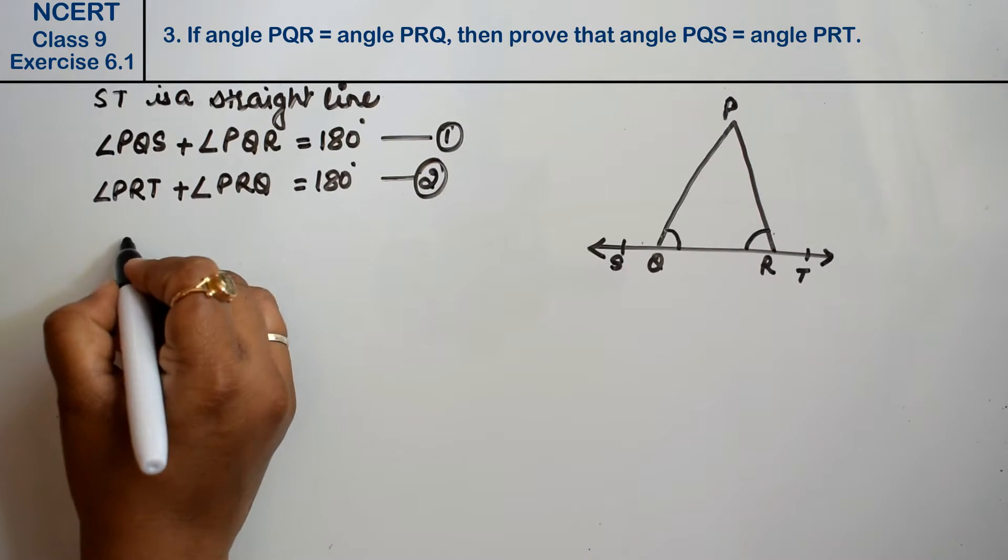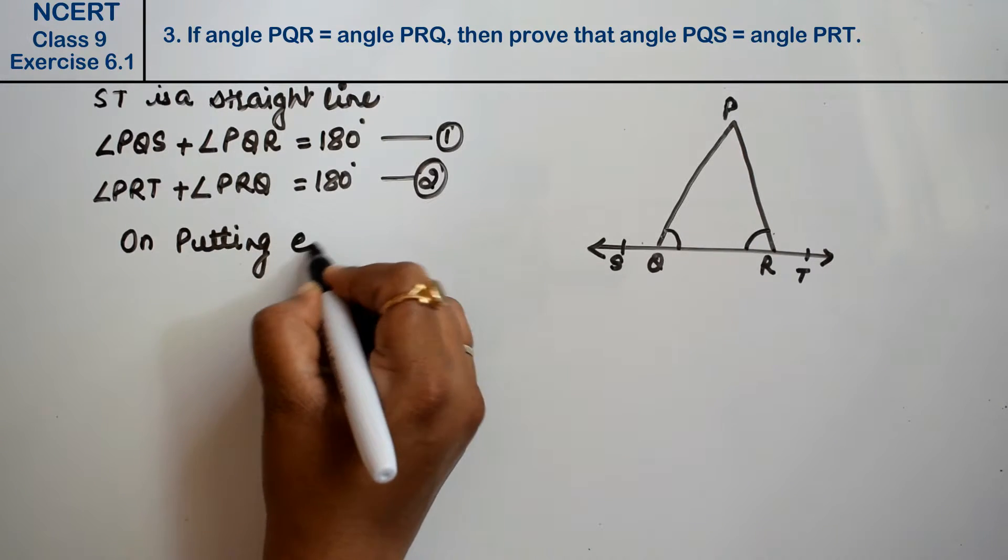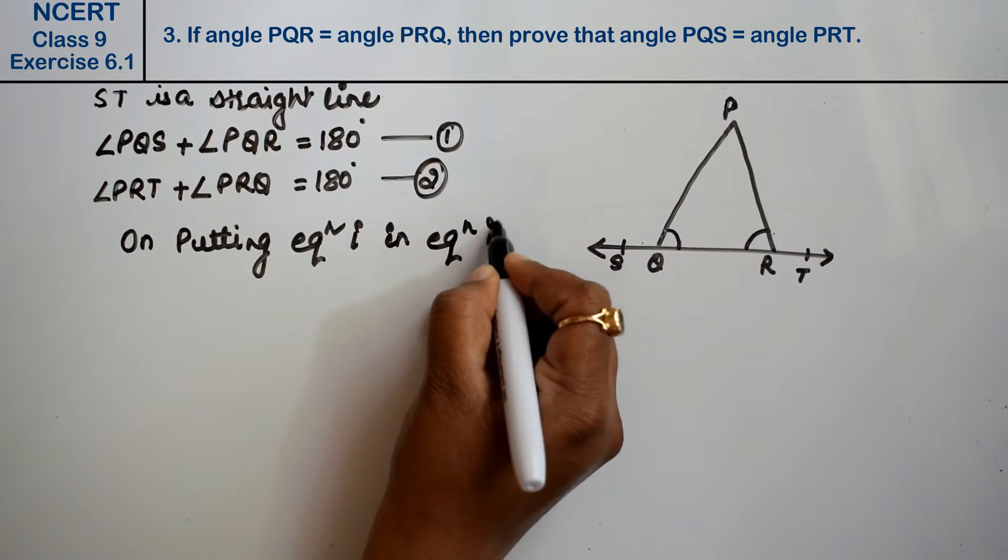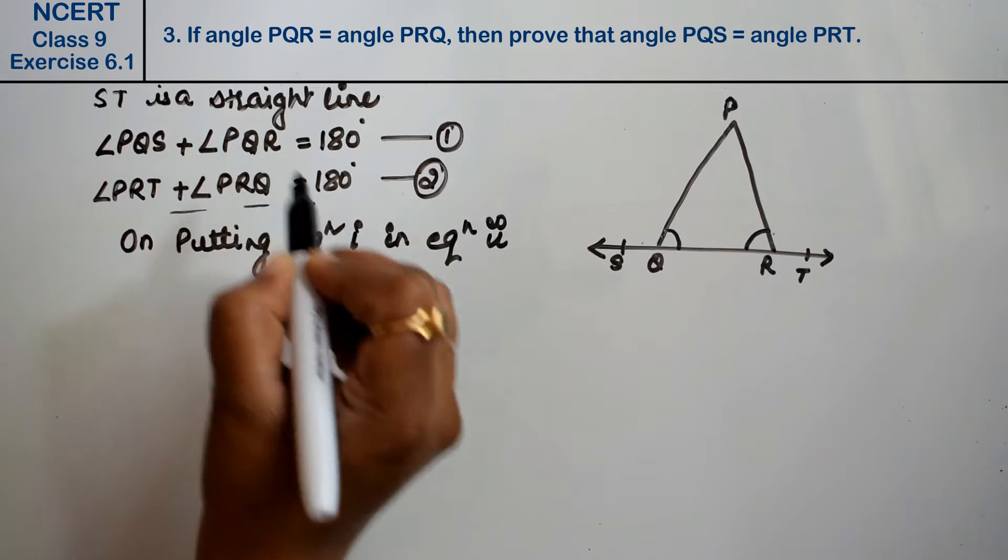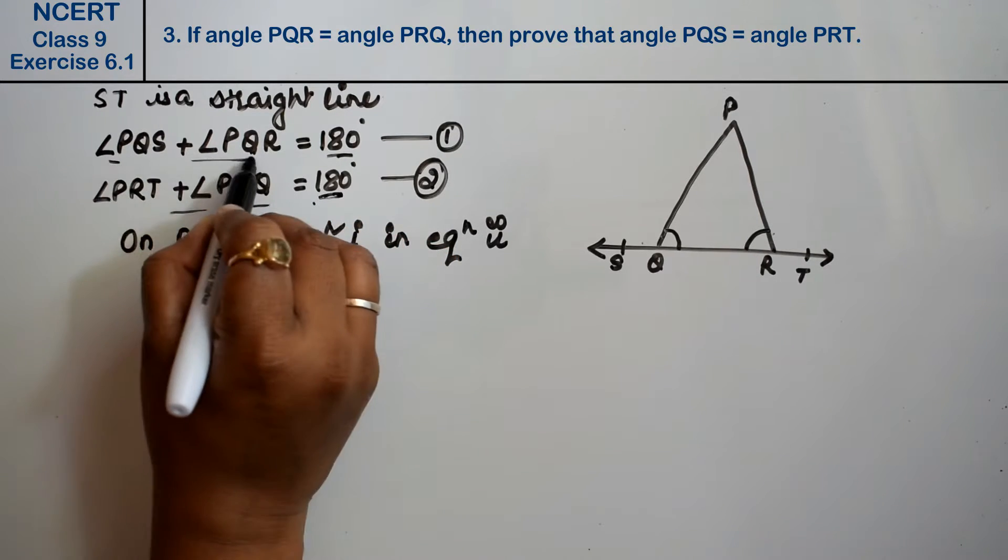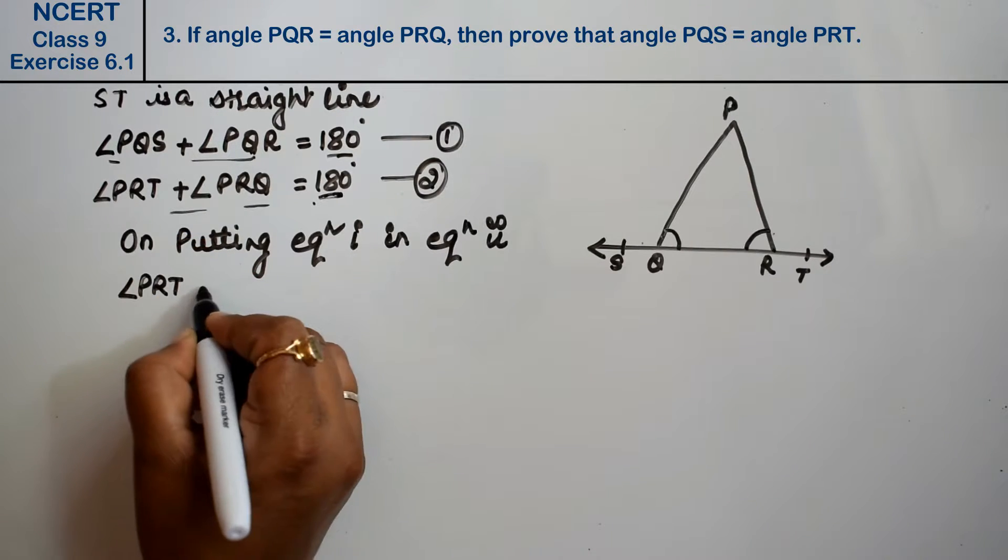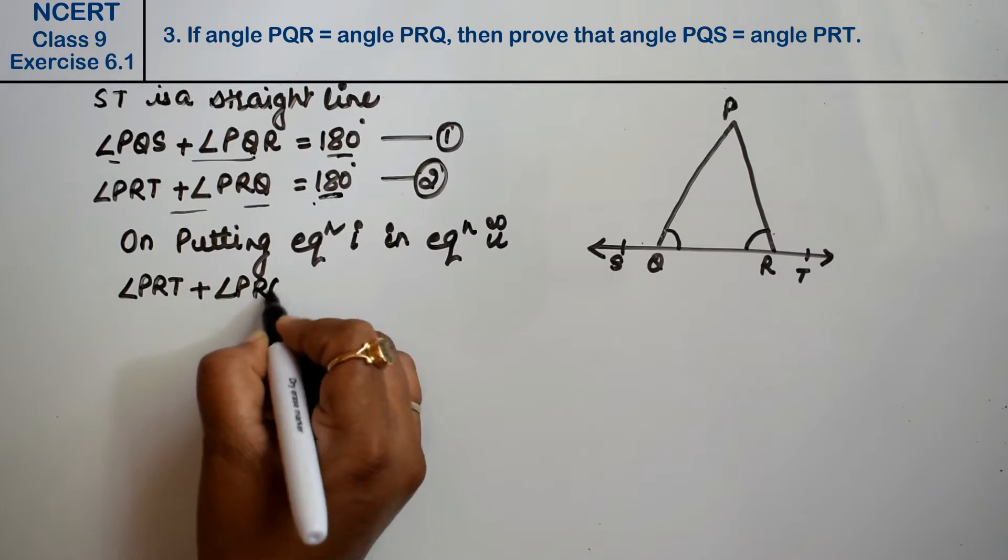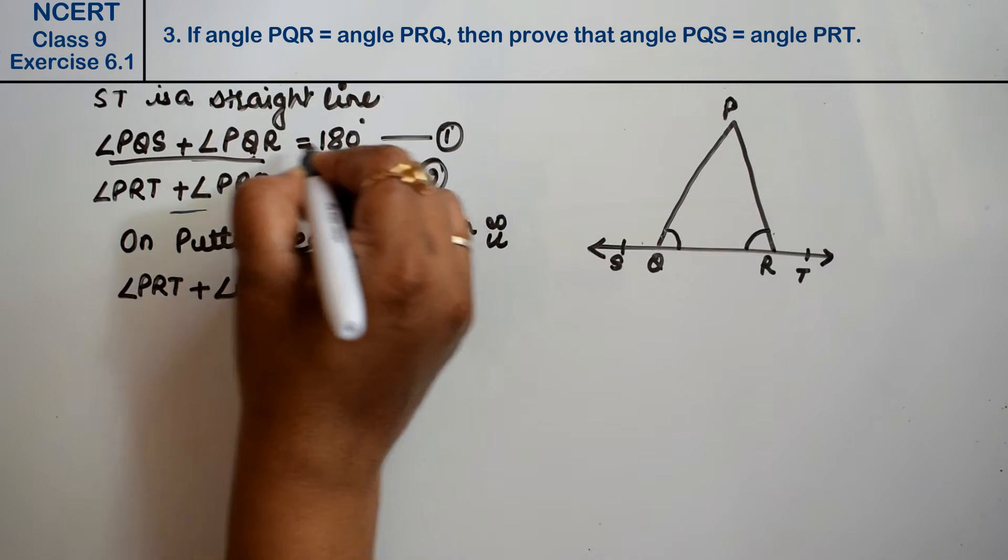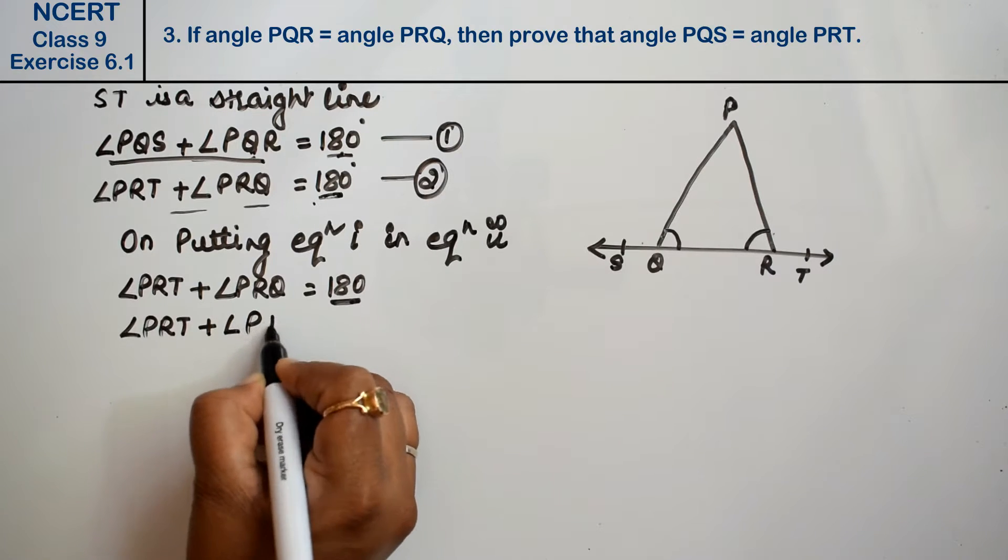Now, putting equation 1 into equation 2, we have both equal to 180 degrees. So angle PRT plus angle PRQ equals 180 degrees, which is the same as angle PQS plus angle PQR equals 180 degrees.